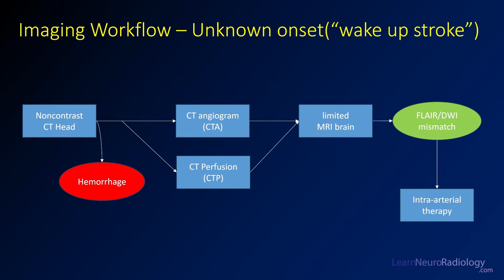If patients wake up and you don't know when they were last normal, the workup is a little different because you don't have that time information to help guide treatment decisions. In those cases, you'll start with a non-contrast CT of the head to check for hemorrhage, possibly proceed with CTA and CTP if available, but really you'll go straight to a limited MRI consisting of diffusion-weighted imaging and FLAIR. If there is a mismatch, you may move on to intraarterial therapy because it's likely that tissue can be saved.